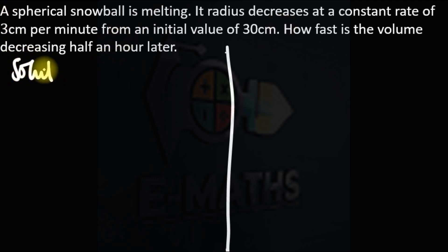The radius is decreasing, so I'm saying that dr/dt is minus 3. The minus sign is because it is decreasing. Since they gave us initial value, we need to write the radius in terms of the time.